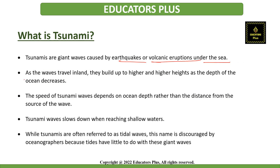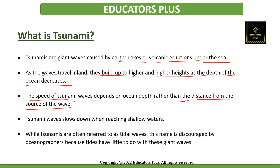Tsunamis are giant waves caused by earthquakes or volcanic eruptions under the sea. Out in the depths of the ocean, tsunami waves do not dramatically increase in height, but as the waves travel inland they build up to higher and higher heights as ocean depth decreases. The speed of tsunami waves depends on ocean depth rather than distance from the source. Tsunami waves may travel as fast as jet planes over deep waters, only slowing down in shallow waters.